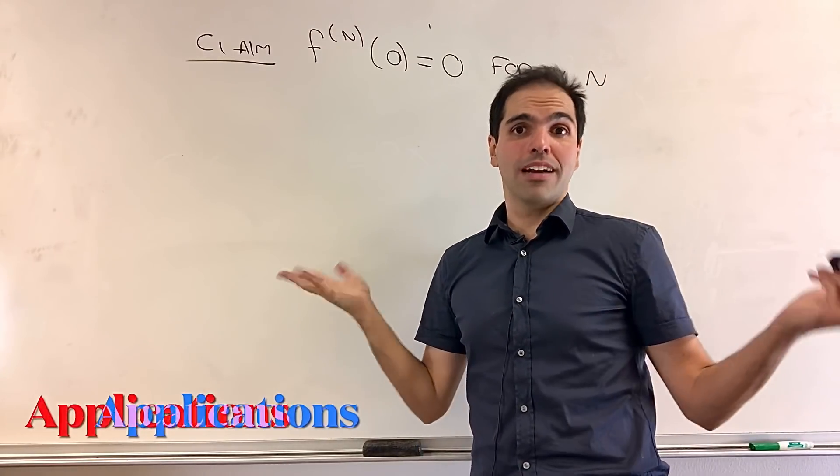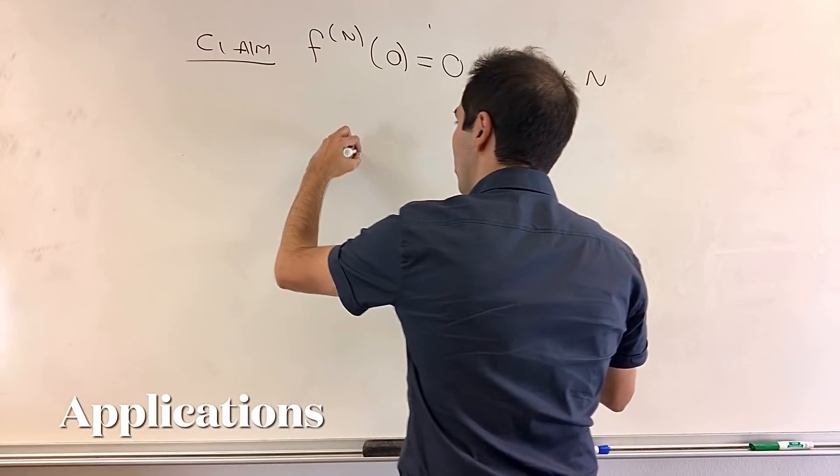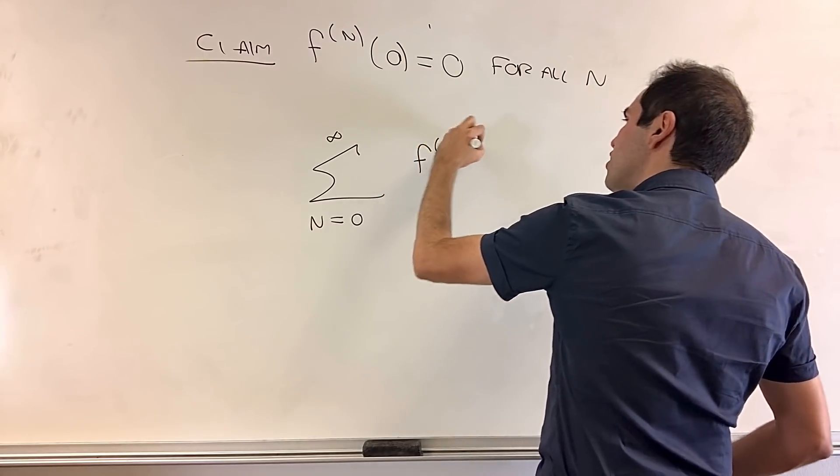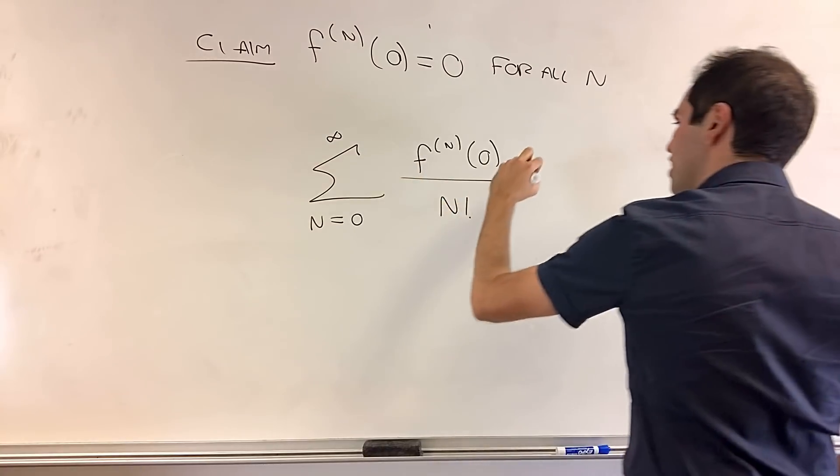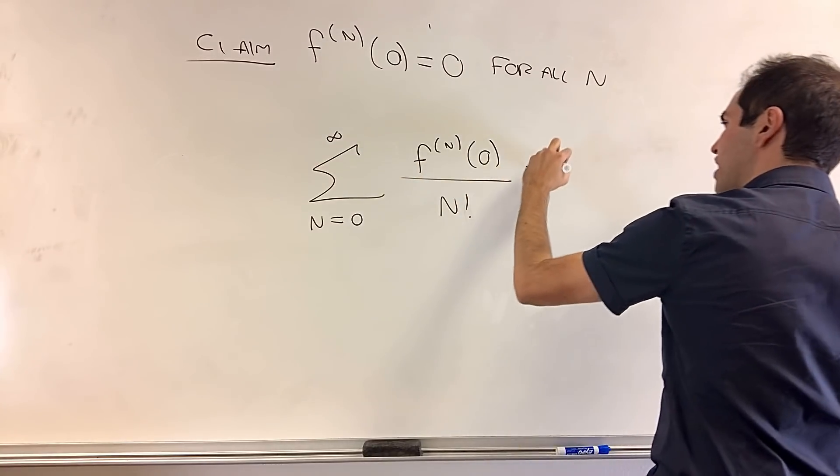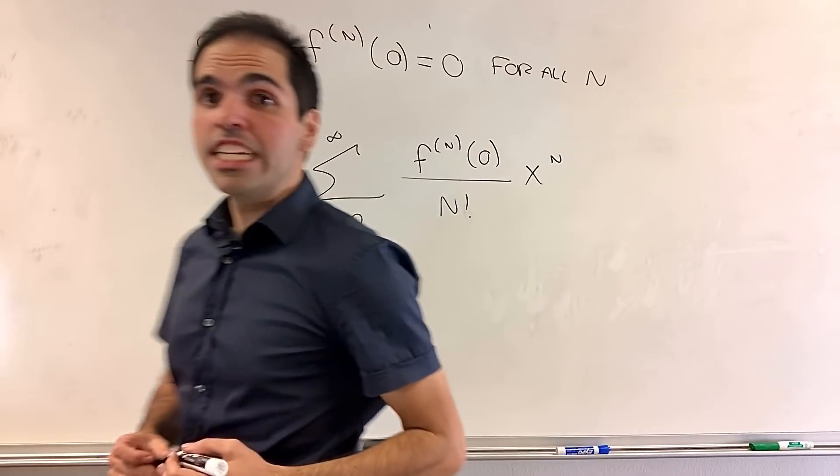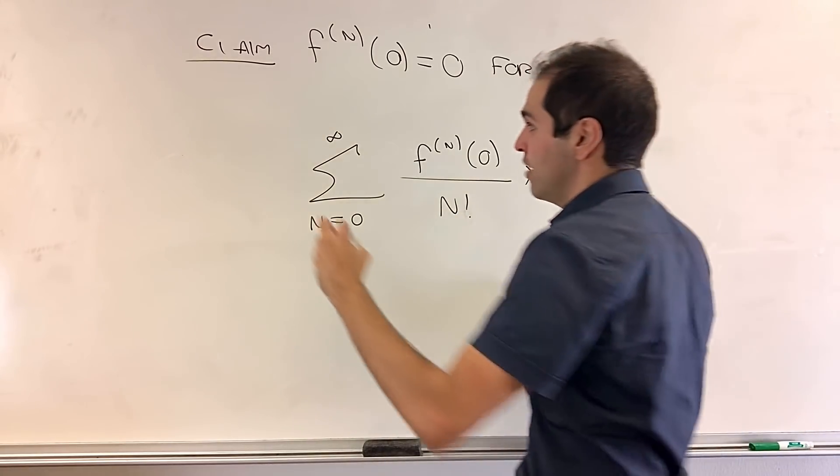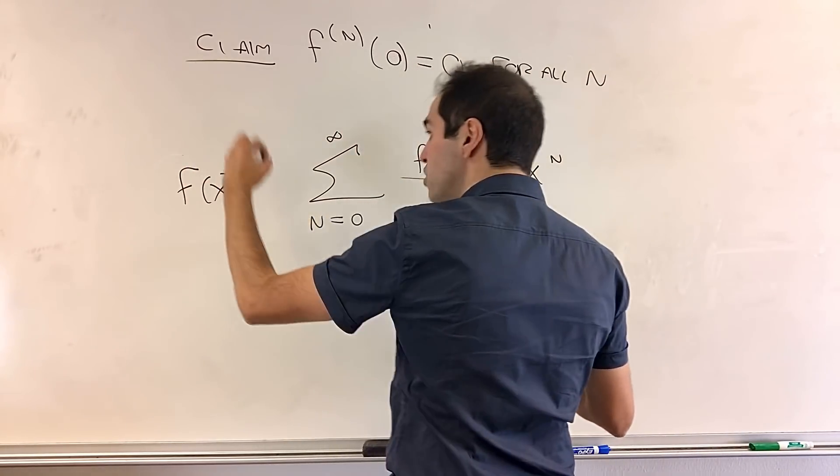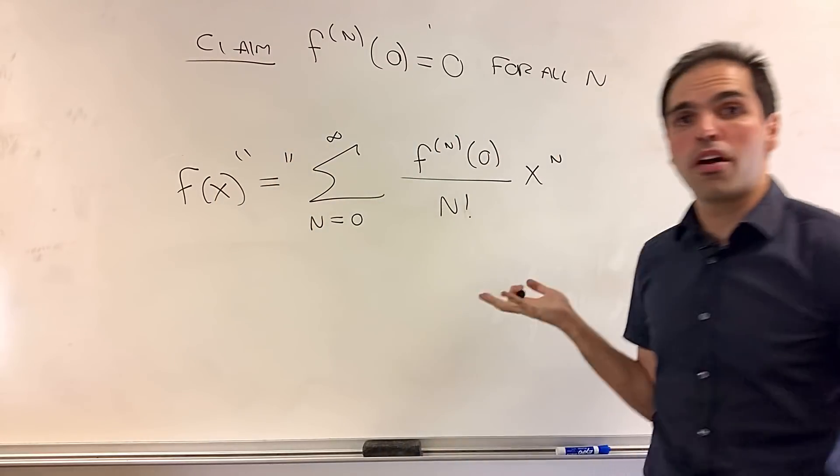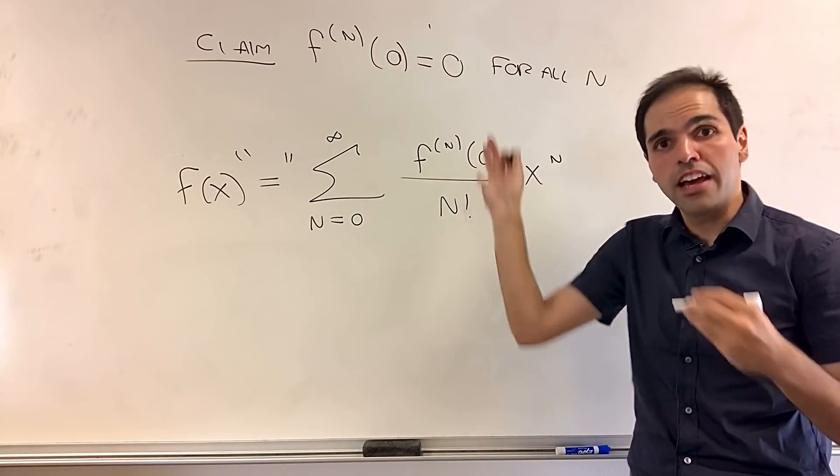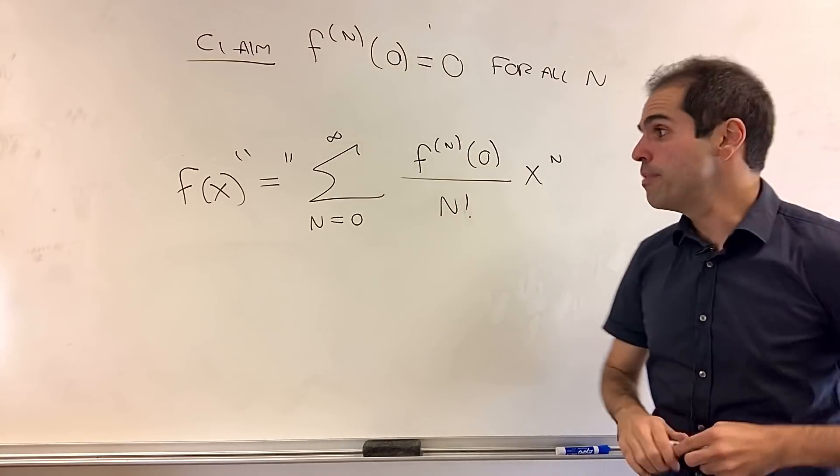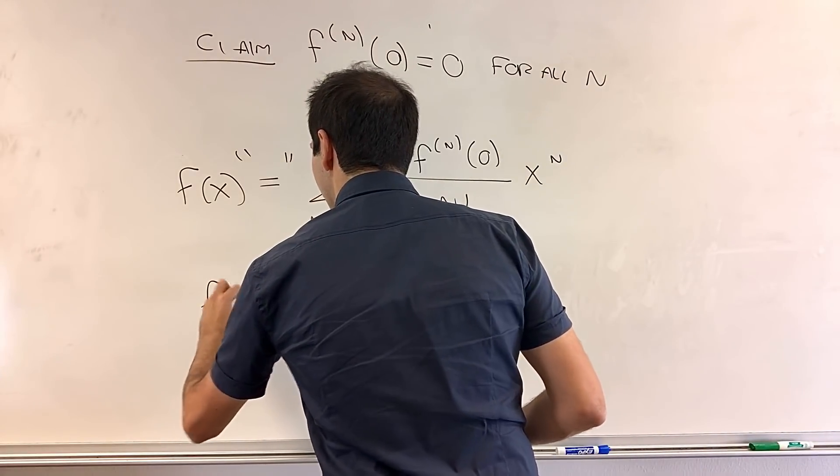Because remember what the Maclaurin series of a function is. The Maclaurin series is just a sum from n from zero to infinity of the nth derivative of f at zero over n factorial times x to the n. And the question is, does this Maclaurin series actually approximate f well or not? Because for e to the x, it's actually a very good approximation. You can show that for every x, it goes to e to the x.